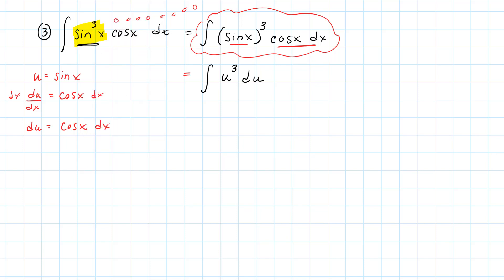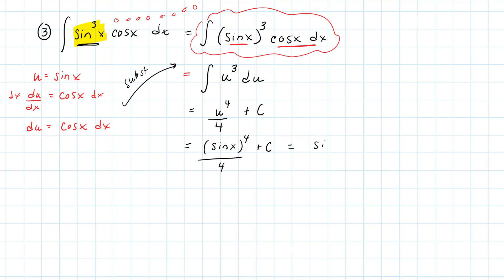Making that direct substitution, this becomes the integral of u³ du — no manipulation needed, just direct substitutions. Now taking that integral: using the power rule, the integral of u³ becomes u⁴/4. It's an indefinite integral so we have + C. Then back-substituting u: (sin x)⁴/4 + C, which using trig shorthand notation is sin⁴(x)/4 + C. Taking the derivative gives back sin³(x) cos(x).